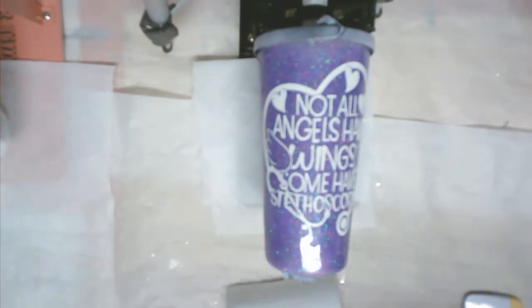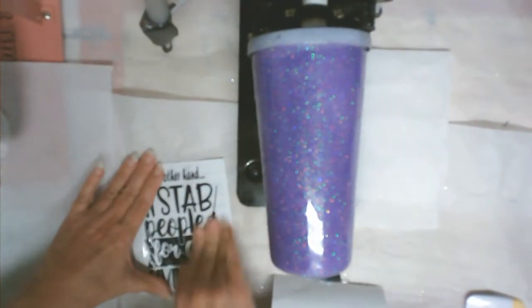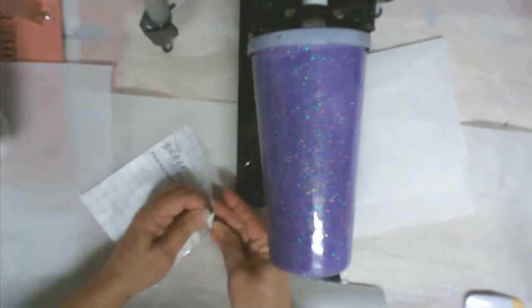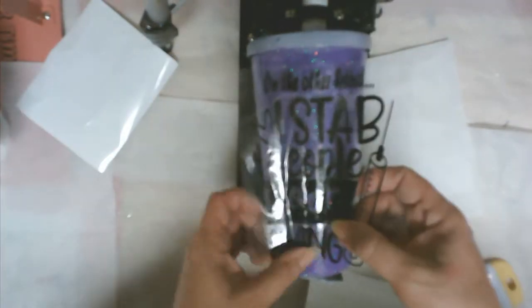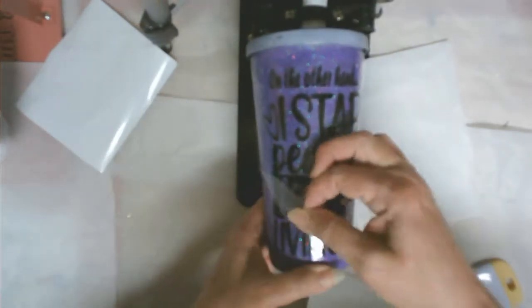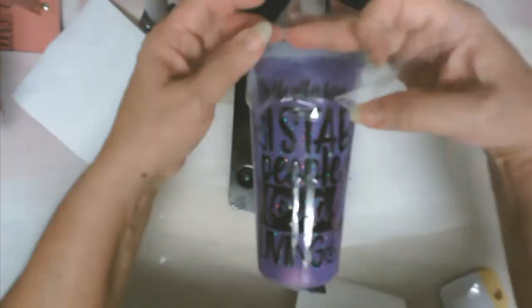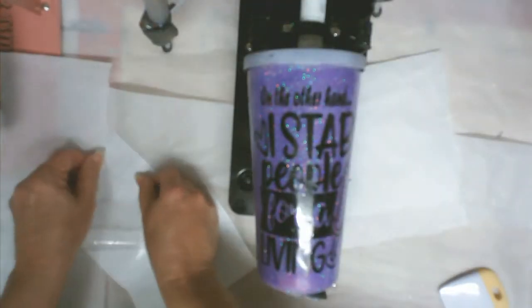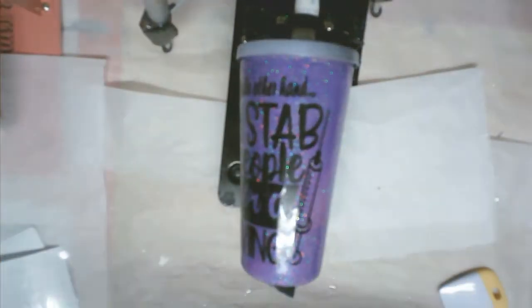I have now turned it to the back and I'm going to put this one on the back side. The front one said 'Not all angels have wings, some have stethoscopes.' This one says 'On the other hand, I stab people for a living,' so I thought that was kind of cute. Same thing—you just slowly peel it off and then I firmly press down on the vinyl making sure that it is stuck everywhere.